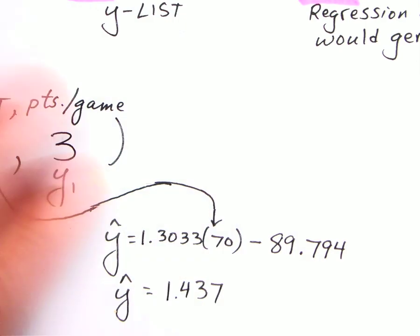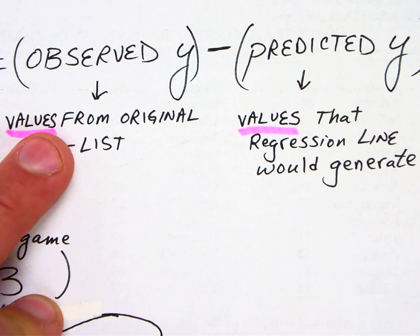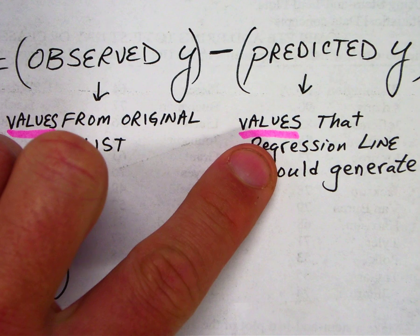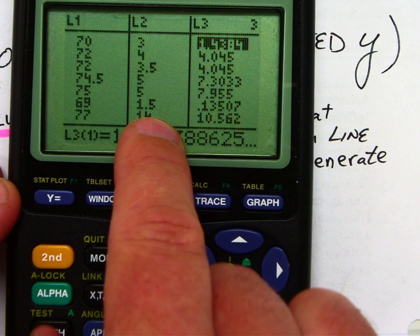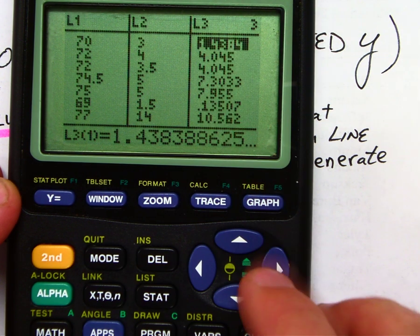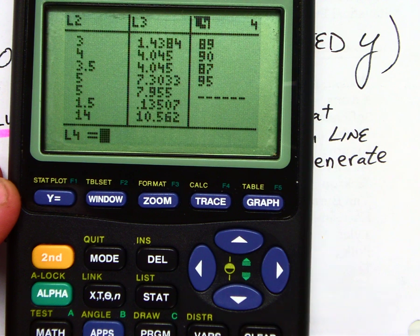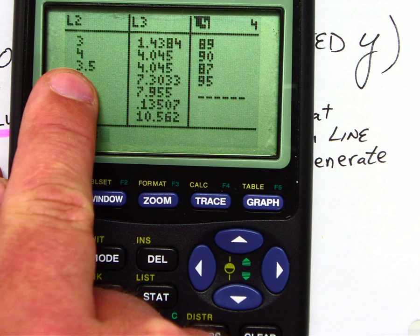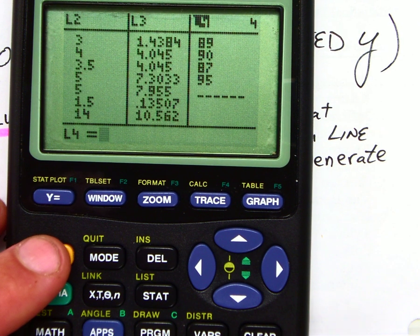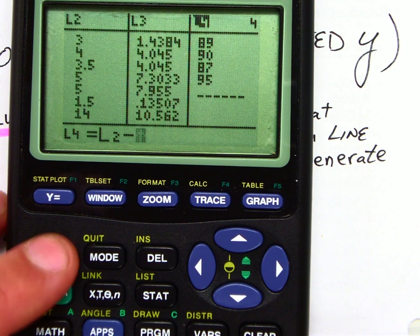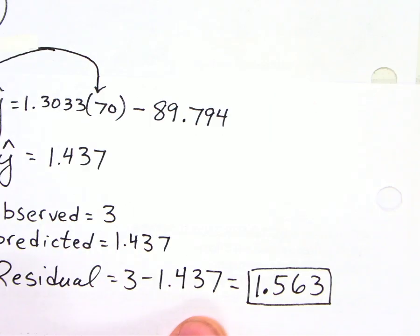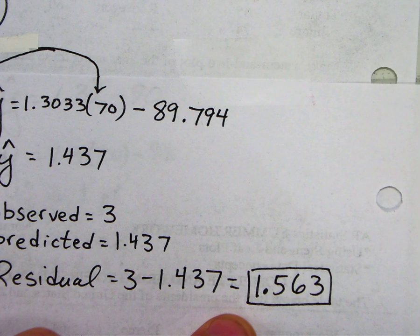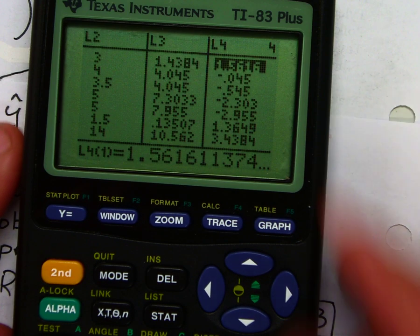Now, a residual is the difference of the observed minus the predicted, right? Well, here's my observed, my original Y values. Here's my predicted. So I'm just going to define list 4 as the difference of list 2 minus list 3, L2 minus L3, enter. Now, notice there's my 1.5 that I got by hand right here. See my 1.563? That's my residual that I did by hand for the first point value.